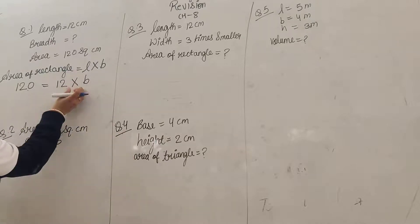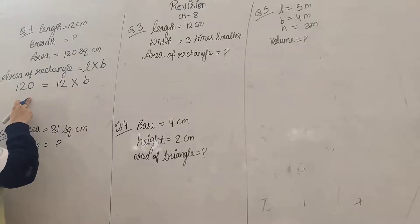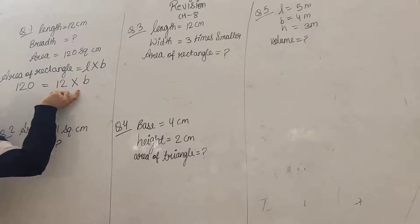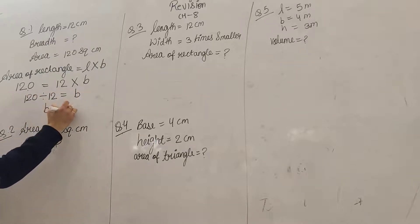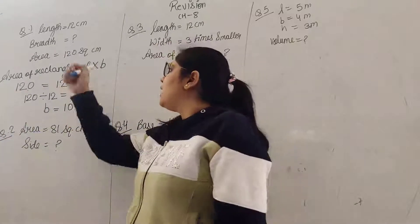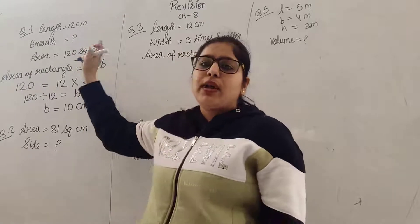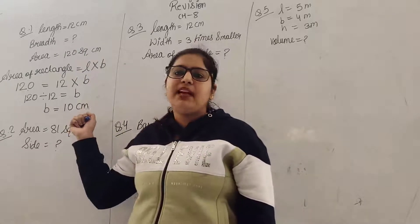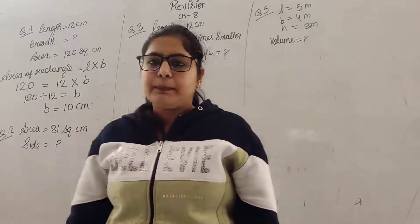यह एक rule है: अगर कोई चीज यहाँ पर plus कर रही है तो यहाँ पर minus करेगी, अगर यहाँ पर multiply का operation है तो यहाँ पर divide का होगा, अगर यहाँ पर divide का है तो यहाँ पर multiply का होगा. तो मैंने देखा यहाँ पर 12 multiply हो रहा है, तो मैं divide करूगी. 120 divided by 12 is equal to B, तो answer आएगा 10 cm. Unit के marks होते हैं — जब length cm में दी हुई है तो breadth भी cm में आई है. Area में square cm लिखते हैं, लेकिन length, breadth या side में square नहीं लगाते.